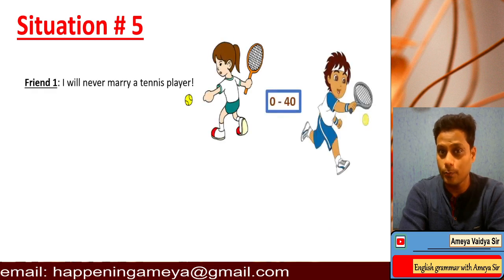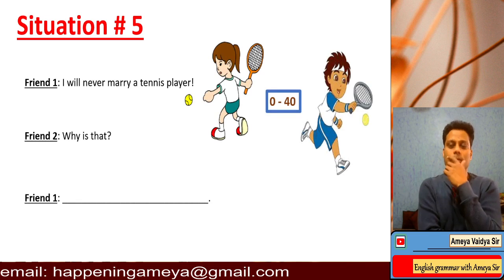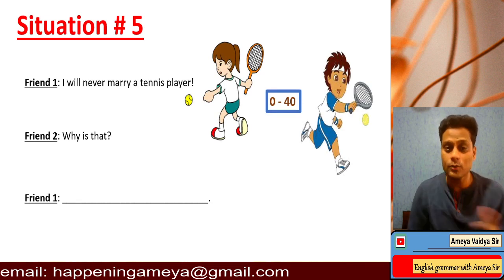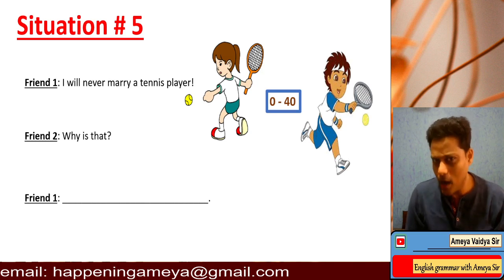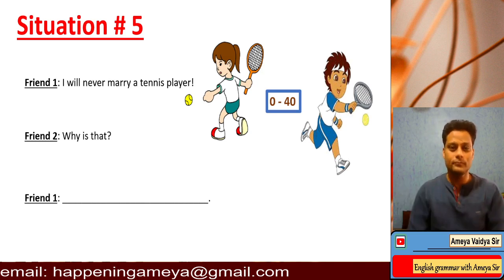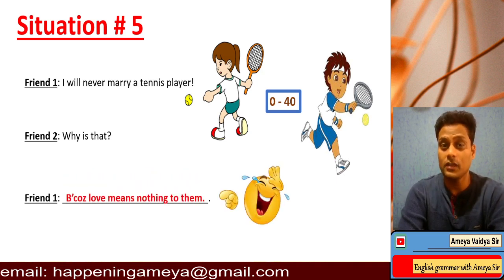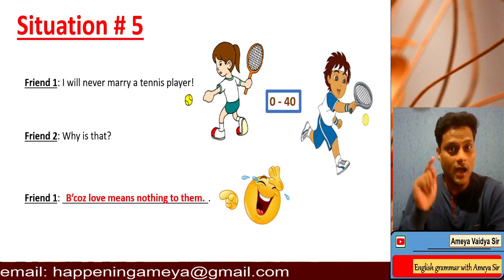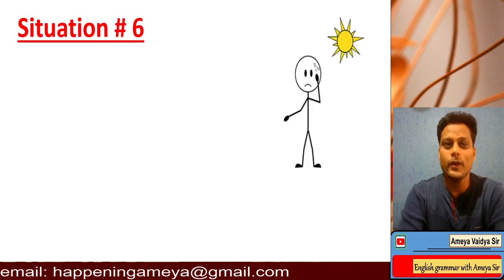Situation number five — halfway there. I hope you are improving your skills. I'm sure that you are loving this new dimension, by the way. I hope you had paused and you've come up with something special. 'I will never marry a tennis player.' 'Why is that?' 'Because love means nothing to them.' I hope you know what this joke is all about — love game. That's why I put the scoreboard there.